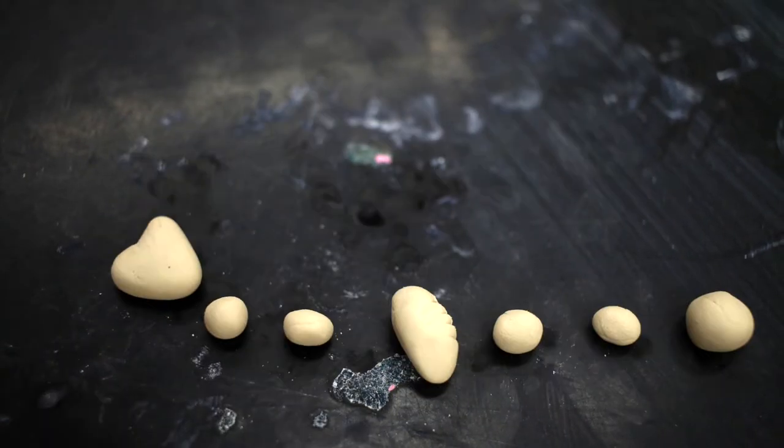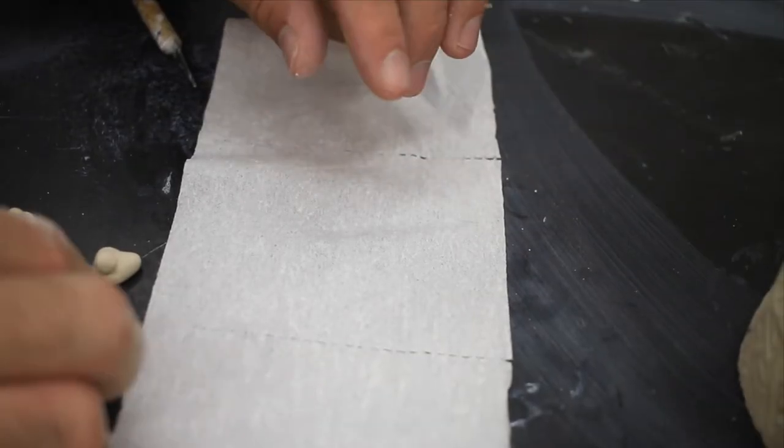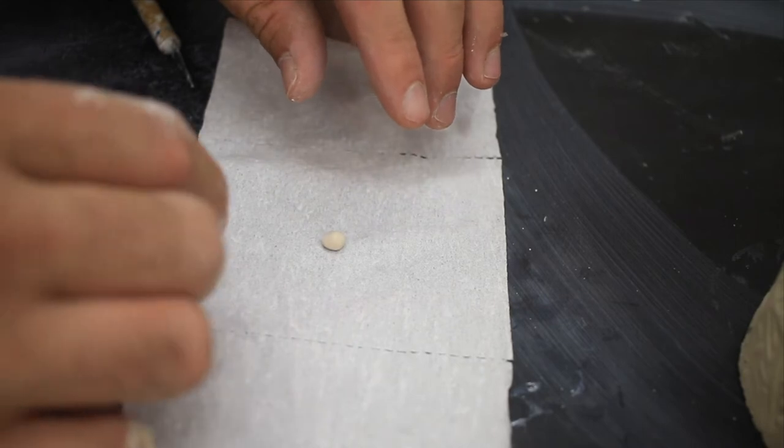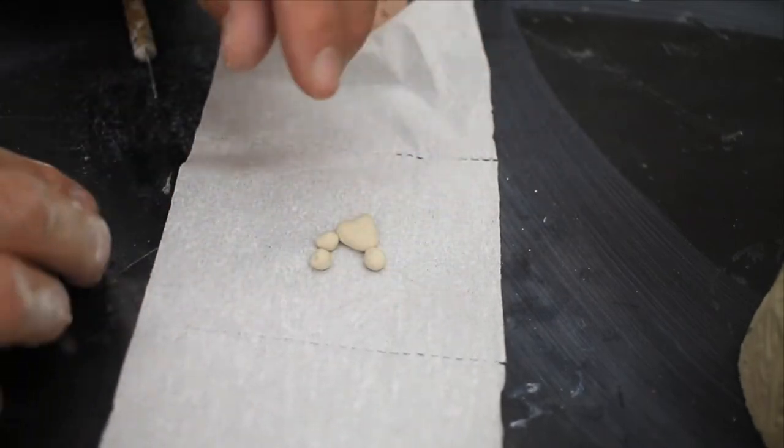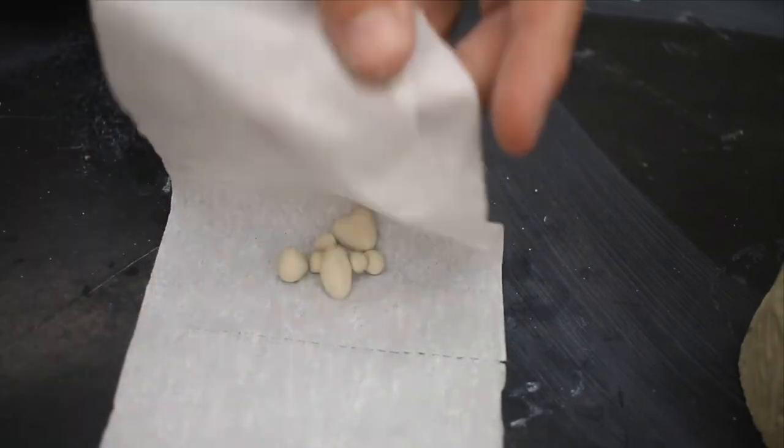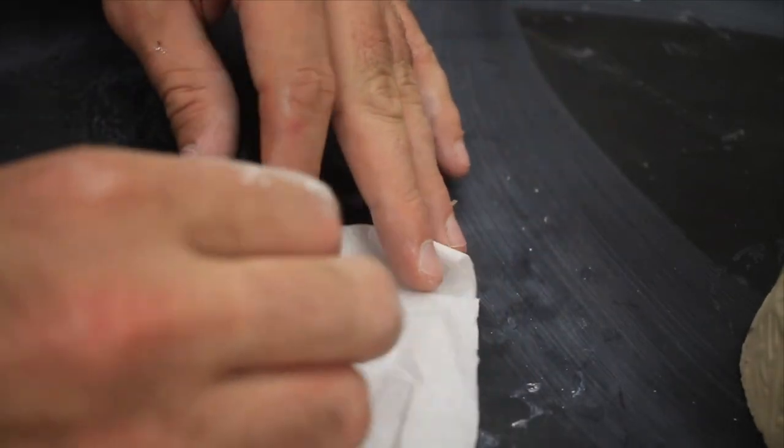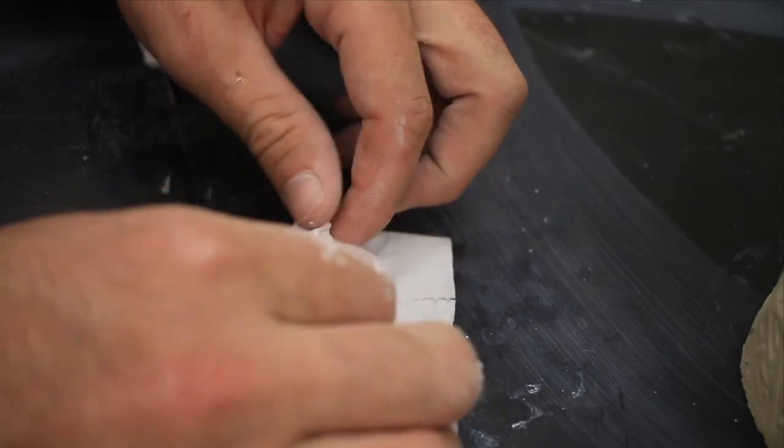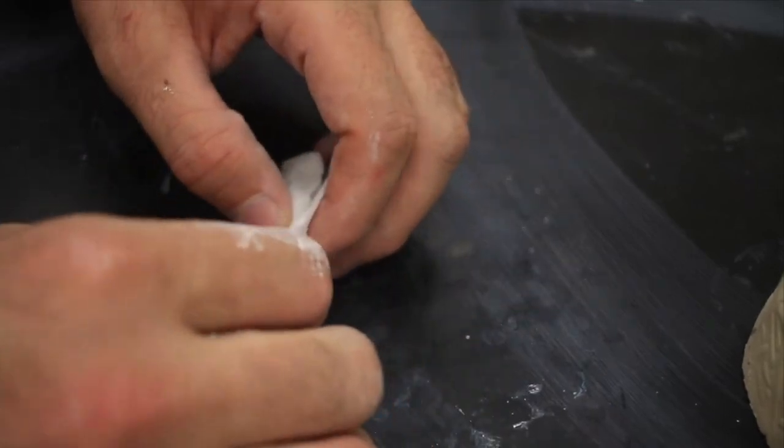When they've dried to the leather hard or bone dry stage, place them in some toilet paper or tissue and wrap them. This will be a separating agent to keep them from sticking to the slip when we attach the other false bottom. Don't worry, the paper will burn out in the kiln and won't hurt your cup.